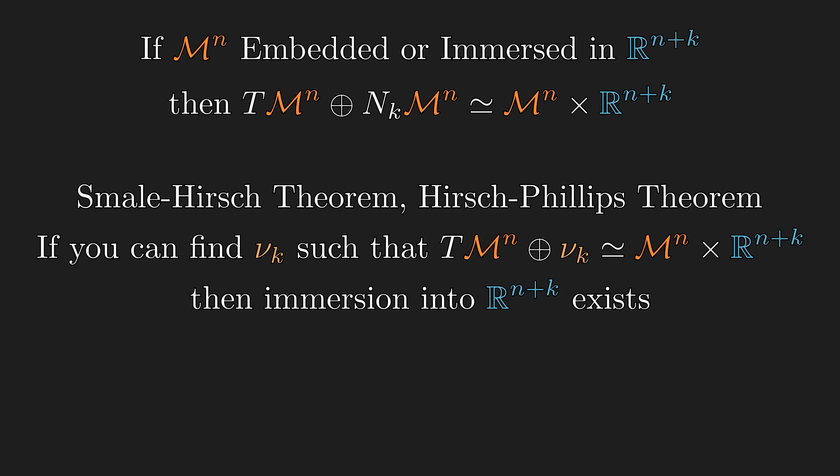This theorem says that if you can find any k-dimensional vector bundle nu that stabilizes a tangent bundle, then an immersion of codimension k must exist. And nu is appropriately named a virtual normal bundle.